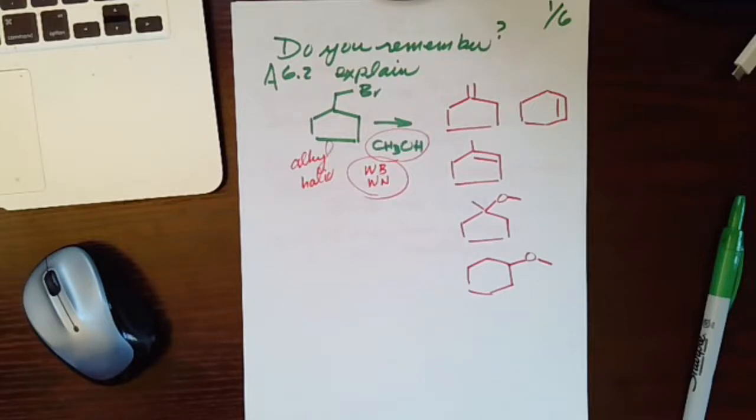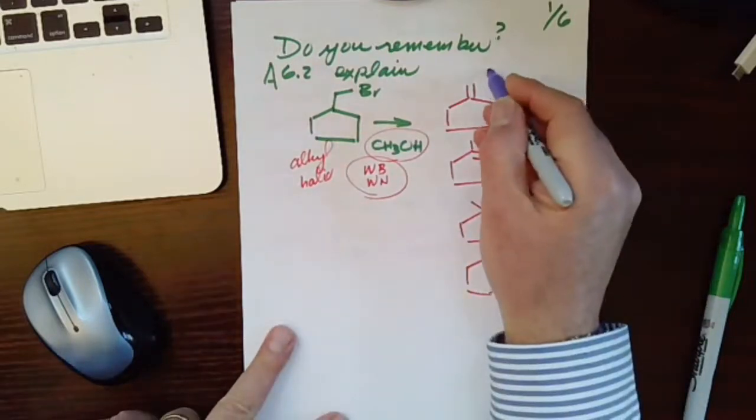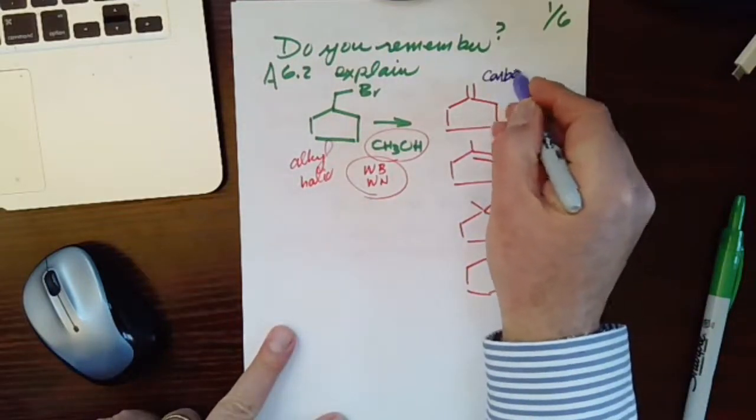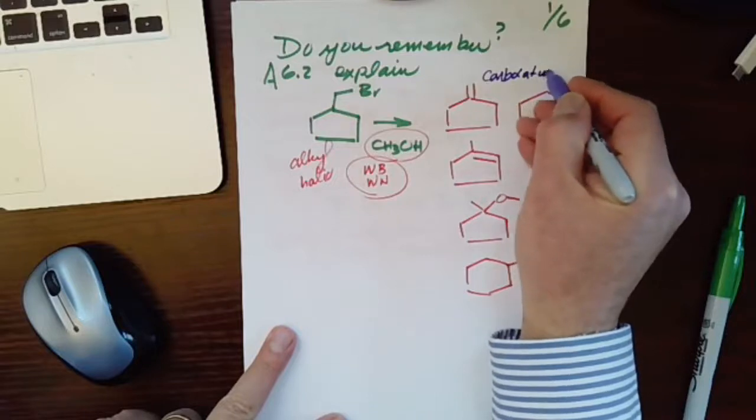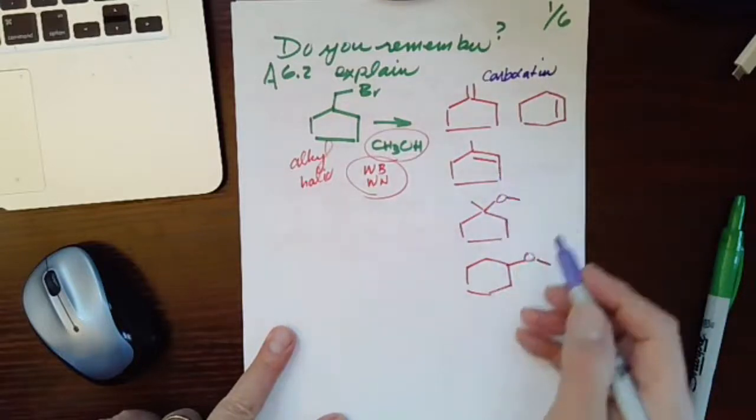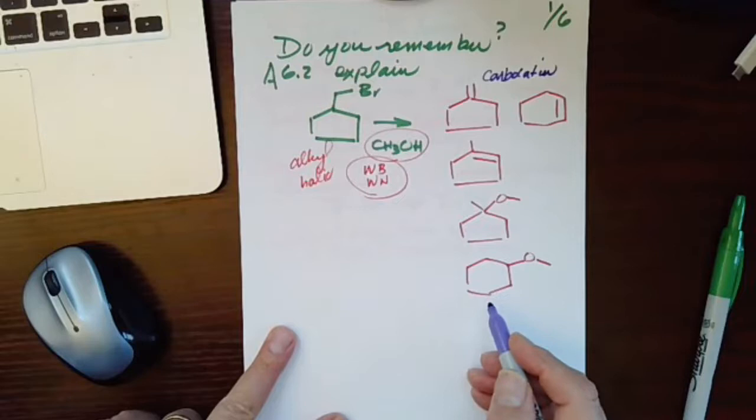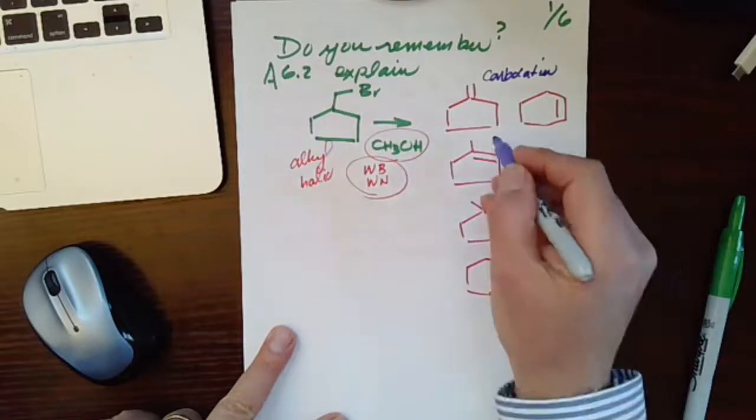Either of these—weak base and weak nucleophile—what does it do? It provides us with a path for a carbocation, and that's what we're going to see. We are seeing a carbocation because all these reactions that we have here, the molecule has rearranged. So if the rearrangement is here,